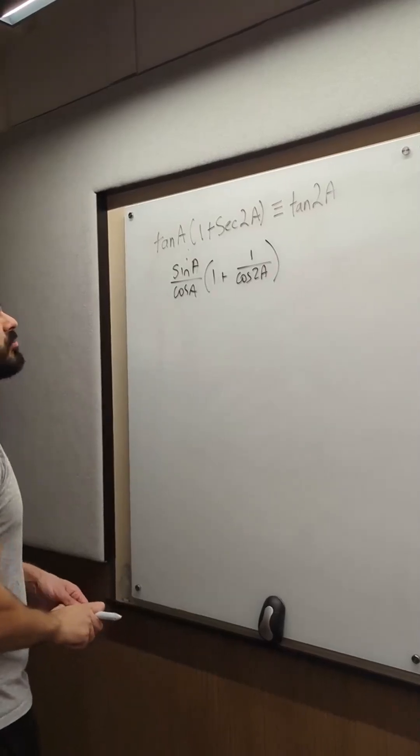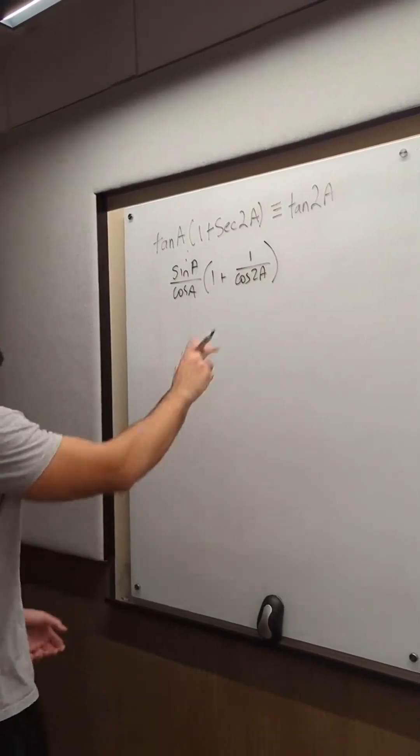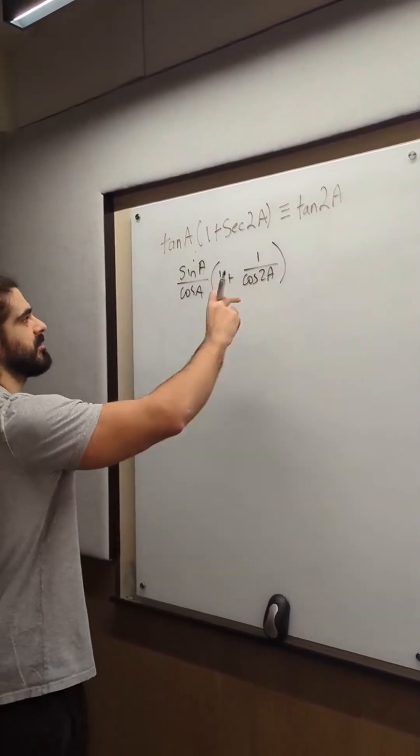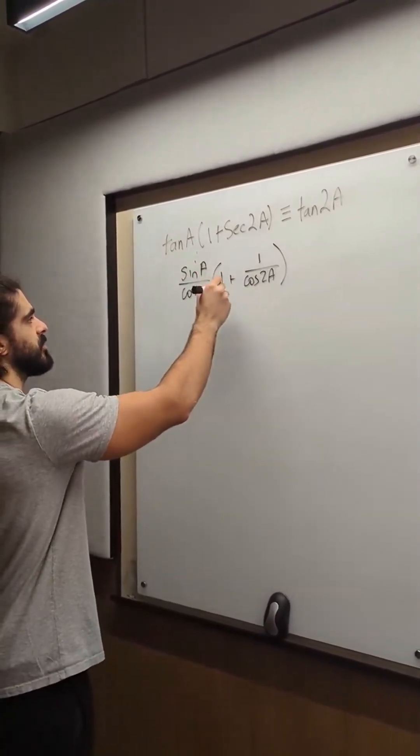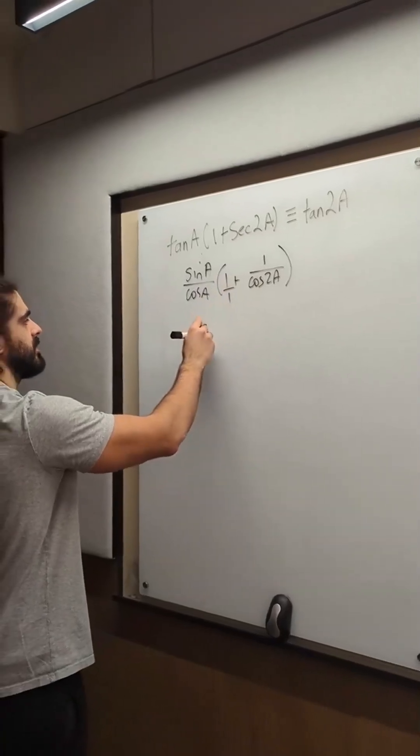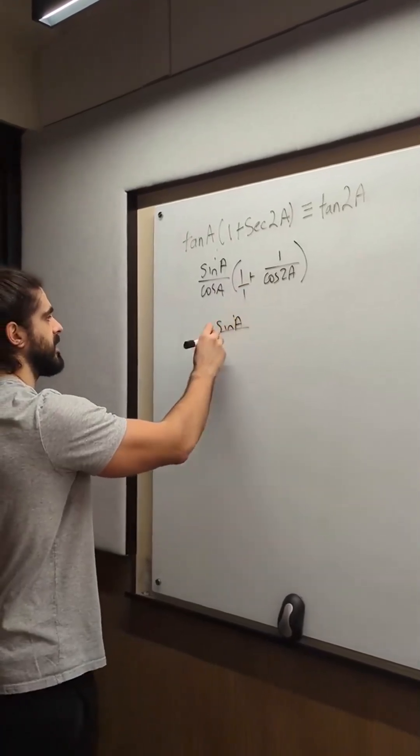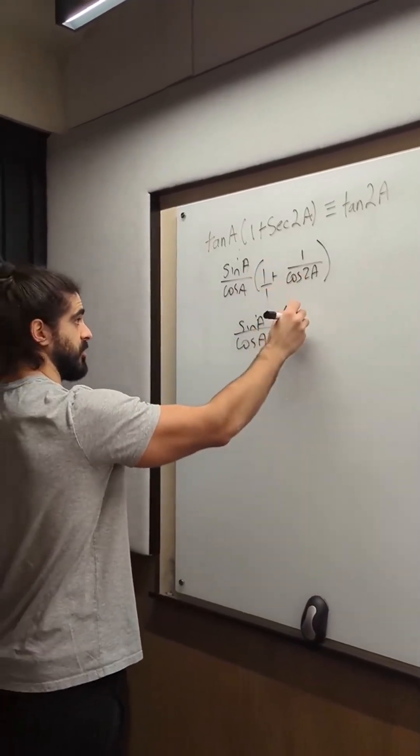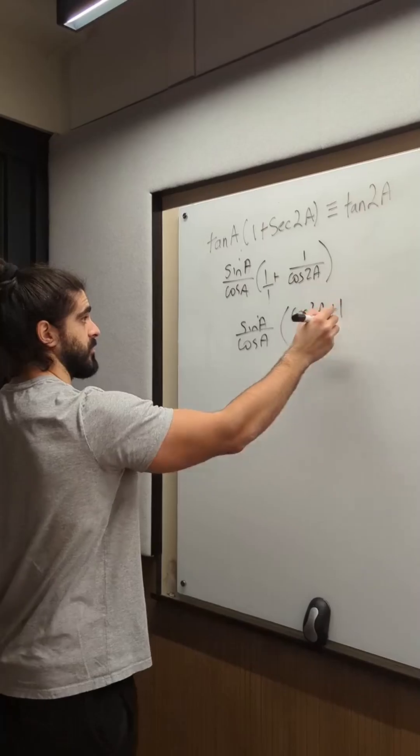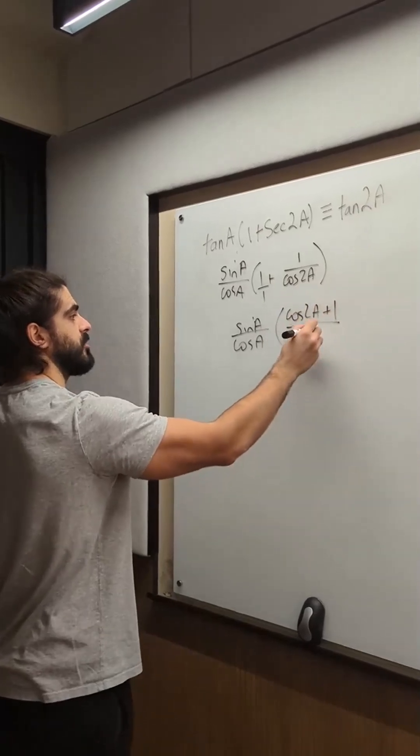Now, one thing I don't know is which cos expansion to use, or if I even want to use it. Actually, we definitely do. Maybe we do common denominator first. Sine over cos a.